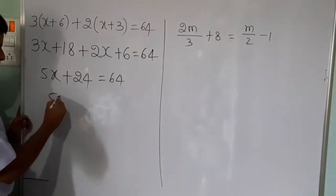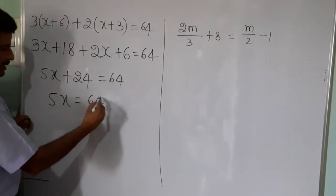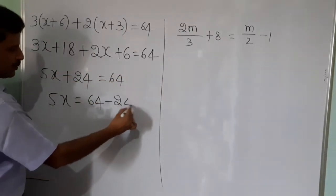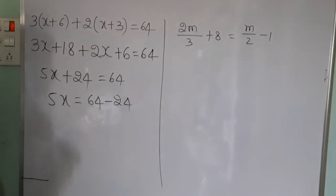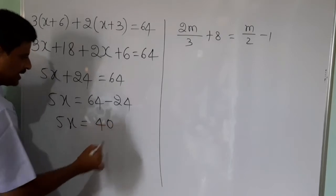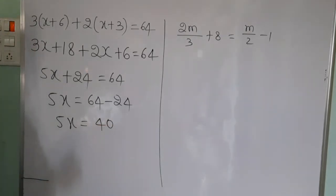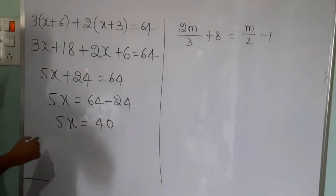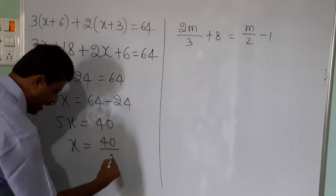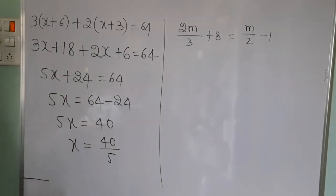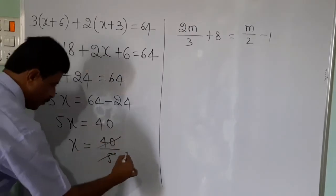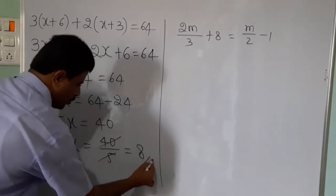So 5x equals 64 minus 24, which equals 40. Therefore 5x equals 40, and x equals 40 divided by 5, so x is equal to 8.